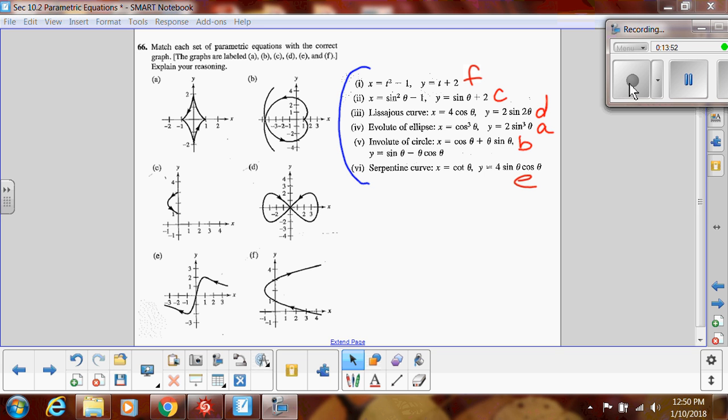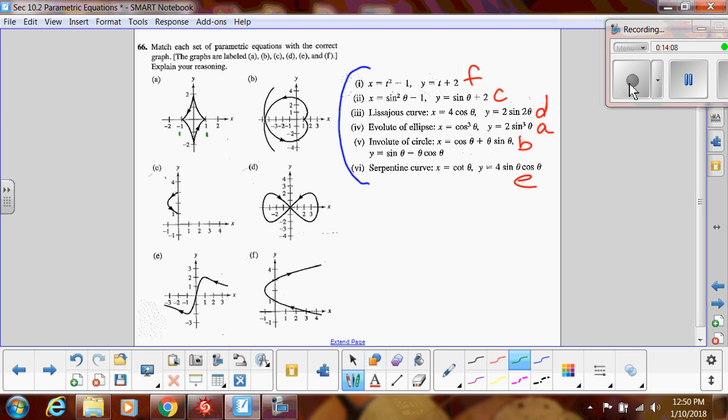So if you look at a lot of these graphs, the x values or the y values are restricted. So for example, on graph A, my x values only go from negative one to one, and my y values look like they only go from negative two to two. So that's something to keep in mind. On B, the highest it goes, it looks like maybe the x equals two. On C, the x values only go from negative one to zero. And then the y values only go from one to three. So again, that's going to be really helpful as you look at these different parameters is to look at your coordinates and see if there's any restrictions.